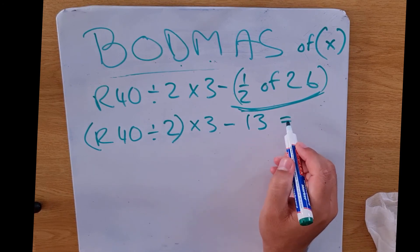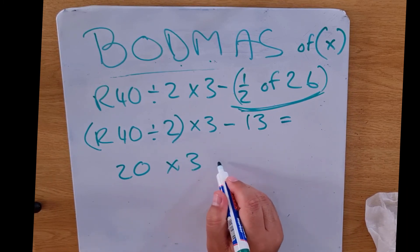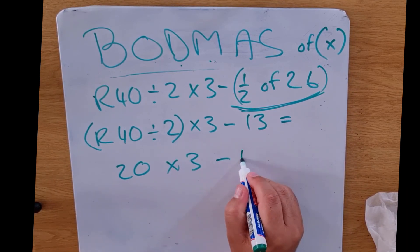You see where I'm going with this? Now we divide it. We've got 20 times 3 minus 13.